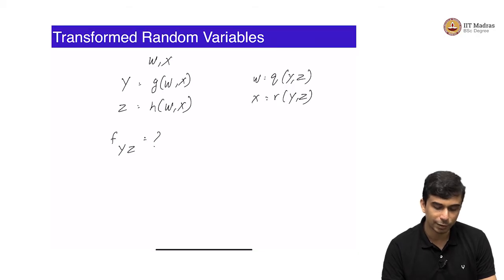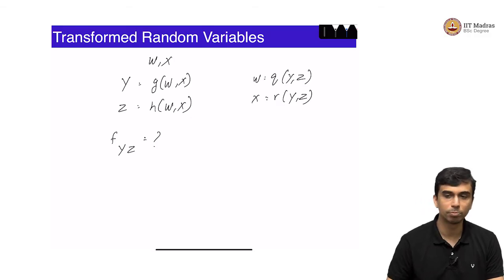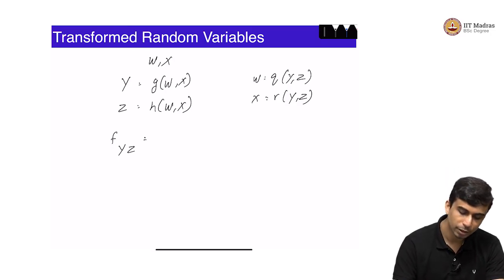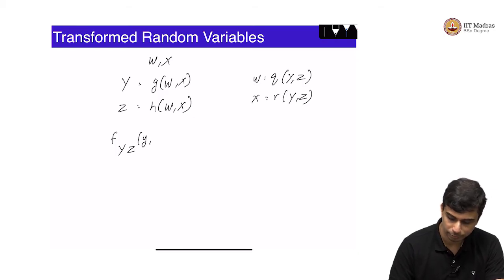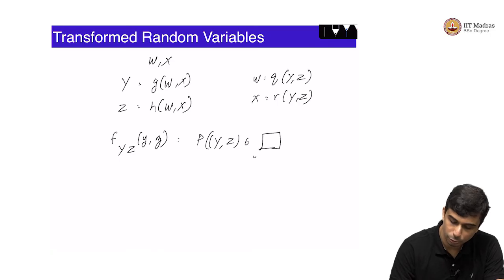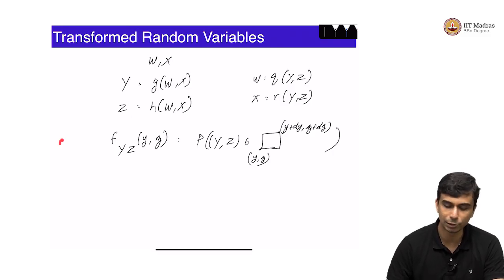But for cases where g and h are invertible, you can get back w and x from y and z. There is a pretty important rule called the change of variable rule in probability. It is related to the change of variable rule in calculus. I am not going to derive this entirely but I will give the broad intuition behind it. What is f_{YZ} of y comma z?